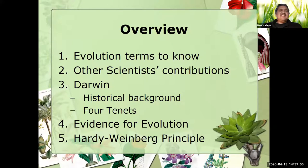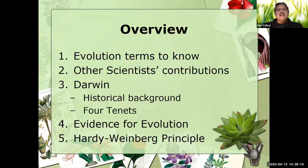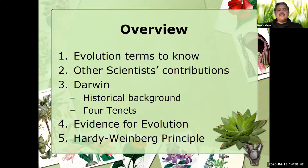Today we'll be taking a look at topics one through four. Evolution terms — in order to have an intelligent discussion of evolution, there are some key terms you'll need to be familiar with. Then we'll look at other scientists' contributions to the idea of evolution, setting the climate so that when Darwin came along in the 1800s and proposed his theory, the time was ripe. We'll look at Darwin's ideas, his background, his four tenets, and then lines of evidence for evolution.